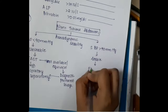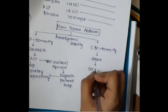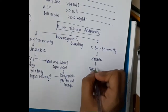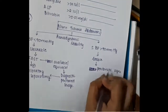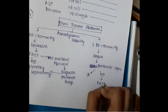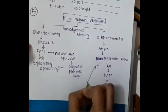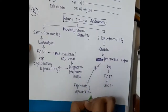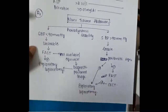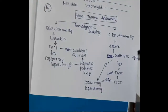If systolic BP is more than 90 mmHg (stable patient), assess for peritonitis signs such as rebound tenderness, guarding, rigidity, and abdominal tenderness. If no peritonitis signs, do FAST then CECT. If signs of peritonitis are present, go directly to exploratory laparotomy. After CECT, if positive, proceed to exploratory laparotomy. Investigation of choice for unstable patients is FAST; for stable patients, it is CECT.